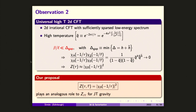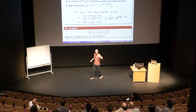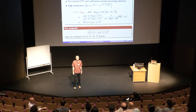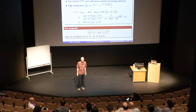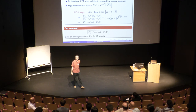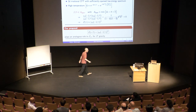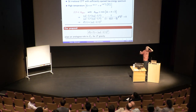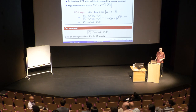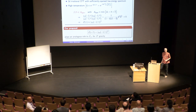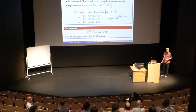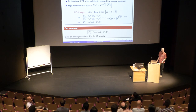What does irrational mean? Irrational means the theory is not rational — it's not a minimal model. Think about Liouville theory if you want an example. Rational means there is a finite number of characters; irrational means not rational.